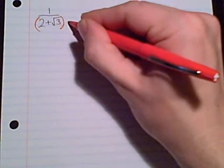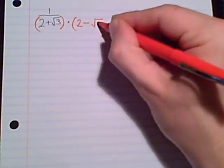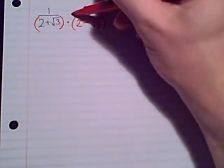Back to our example, 1 over 2 plus radical 3. We see that radical 3 in the denominator as our problem. We need to rationalize the denominator, but since this denominator has two terms, we need to use the conjugate. We will multiply numerator and denominator by the conjugate 2 minus radical 3.